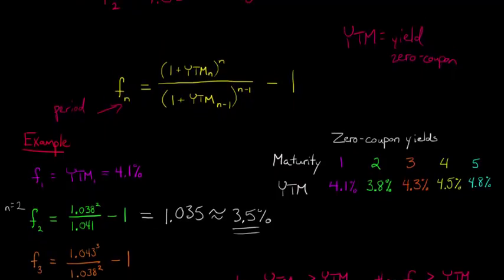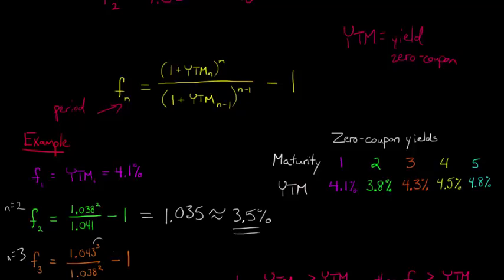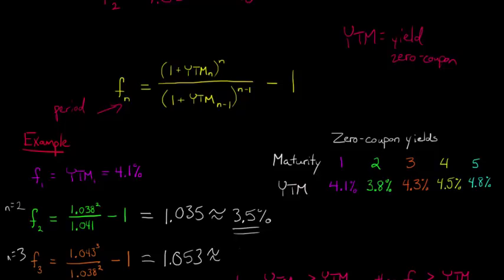Similarly, for the forward rate for year three, we take the yield for year three — 4.3% — add one to get 1.043, and raise it to the 3rd power. In the denominator, we use the yield from year two — 3.8% — so we have 1.038 raised to the 2nd power (since N minus one equals two). Then we subtract one. That gives us a forward rate for year three of approximately 1.053, or 5.3%.